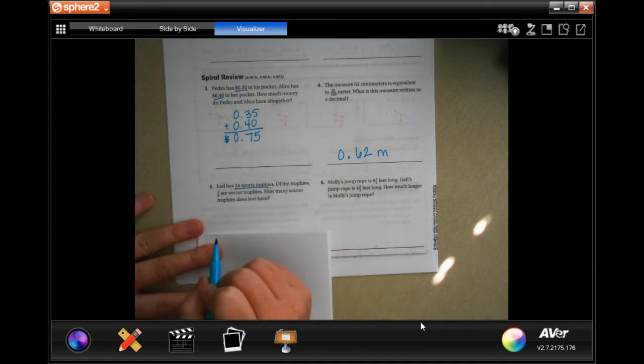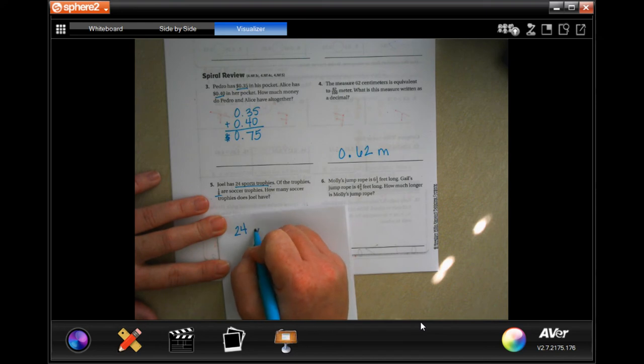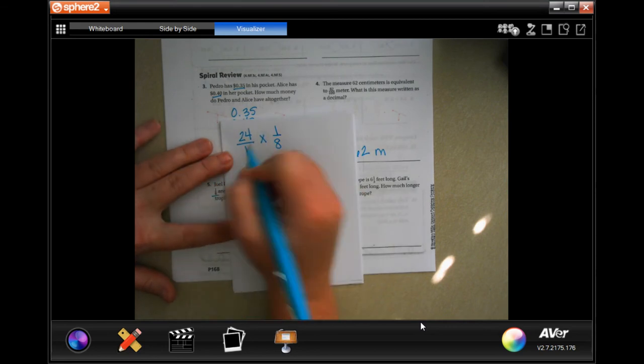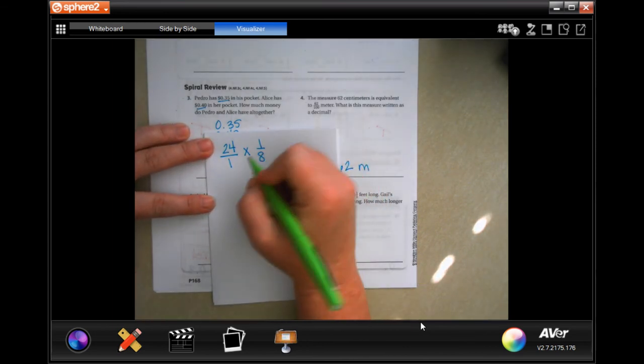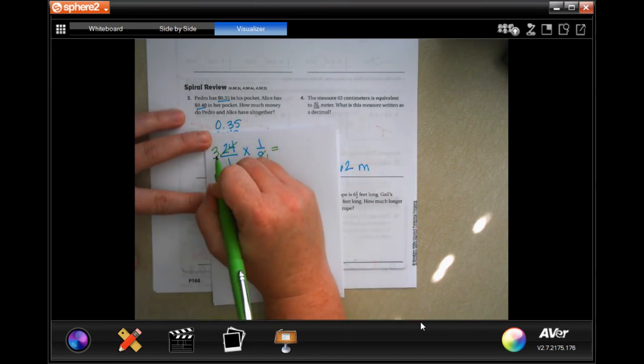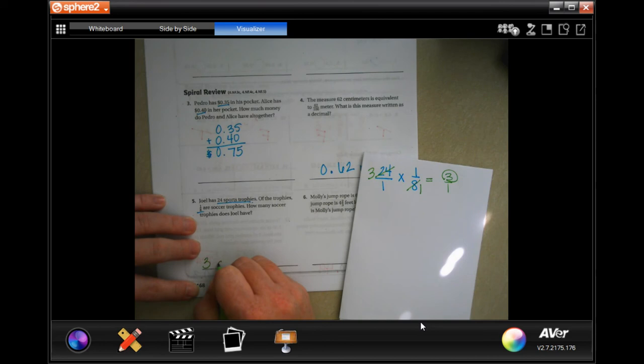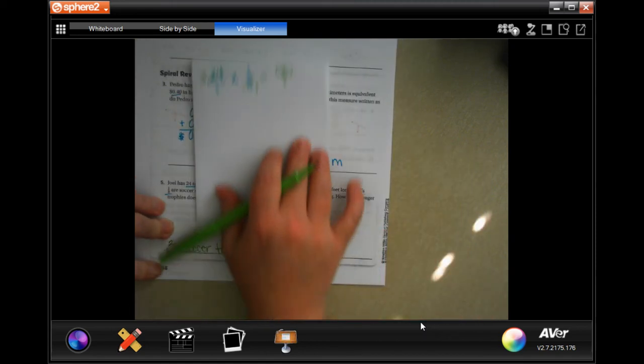All right. Joel has 24 sports trophies. Of the trophies, 1 eighth of the trophies are soccer. How many soccer trophies? So, he has 24, and 1 eighth of them are for soccer. I'm going to put that 24 over 1. 24 over 1 is the same thing as 24. So, 8 goes into 8 once, 8 goes into 24, 3 times. If I multiply straight across now, then I get 3 over 1, which is the same thing as 3. So, 3 soccer trophies. Done. Make sure you share your work, guys.